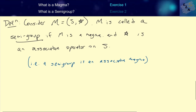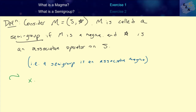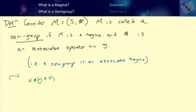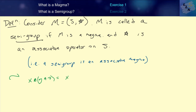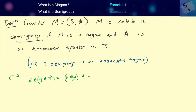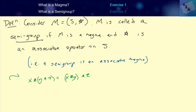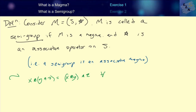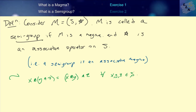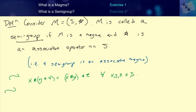In order for an algebraic structure to be a semigroup, S must be closed under star and star must be associative. Associative means that (x star y) star z must equal x star (y star z), and this must hold for all x, y, z in the set S.